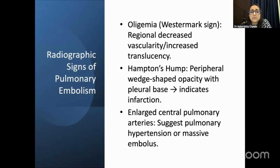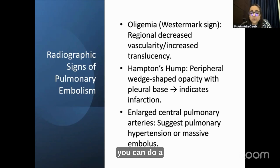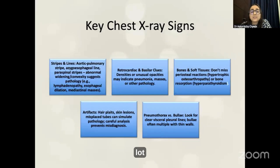For pulmonary embolism, there are a few signs which can be appreciated on a chest X-ray: oligemia, the Westermark sign, Hampton's hump, and the enlarged central pulmonary artery. But always remember that pulmonary embolism also requires other diagnostic criteria as well as clinical presentation — that should never be forgotten.